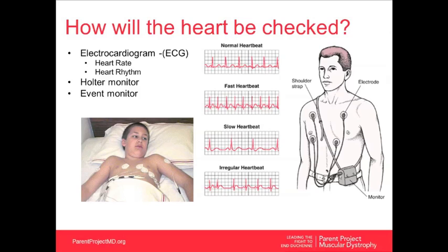An event monitor is similar to a Holter monitor but used for very brief periods to capture or document specific events. For example, if your child feels their heart racing once a week, you take the monitor home and apply it when those symptoms occur, whereas a Holter monitor is a continuous 24-hour device. Which one is ordered depends on the clinical symptoms at the time.